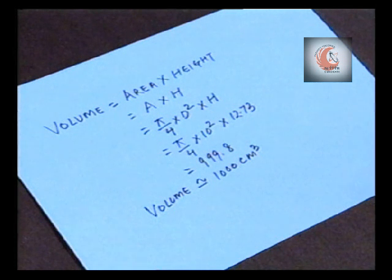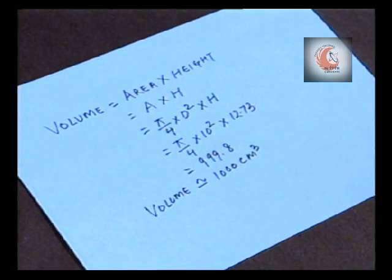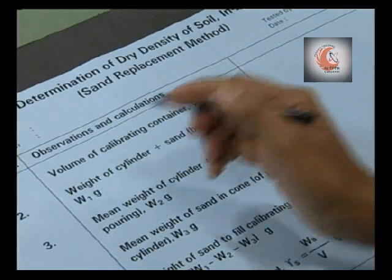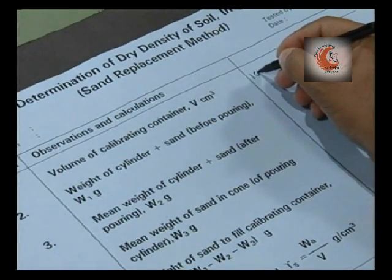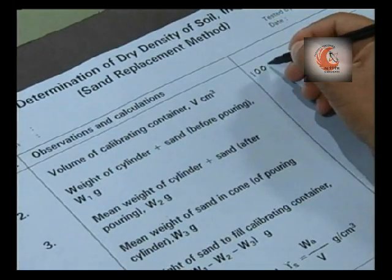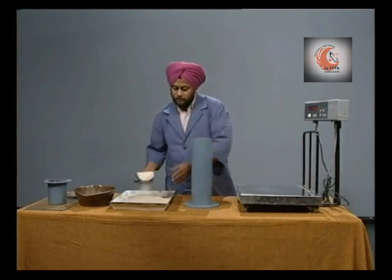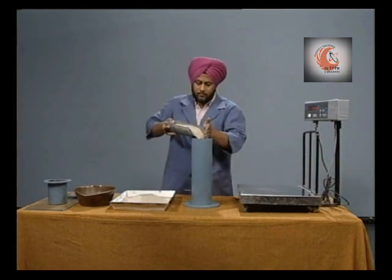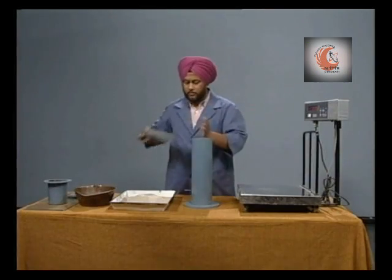By putting the value of diameter equal to 10 cm and height equal to 12.73 cm, the volume of the calibrating container is equal to 1000 cm³. Record the volume of the calibrating container.